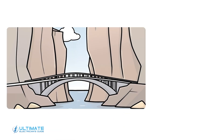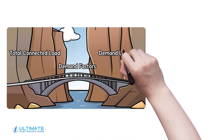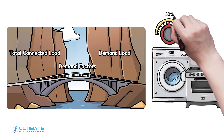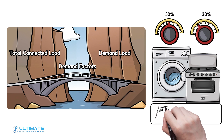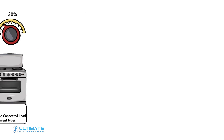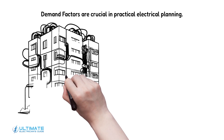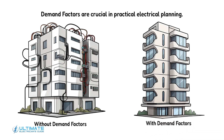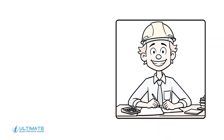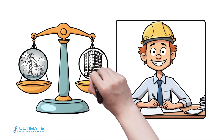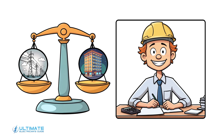Now, to bridge the gap between these two, we use what are known as demand factors. These are typically percentages set out in the NEC used to adjust the connected load of specific equipment types, such as clothes dryers or electric cooking appliances, to a more realistic figure. These demand factors are crucial in practical electrical planning. Without them, every building would have oversized and underutilized electrical systems, leading to unnecessary costs and inefficiencies. By applying these factors, we ensure that our electrical infrastructure is adequately sized — robust enough to handle the building's needs, yet not so large that resources are wasted.